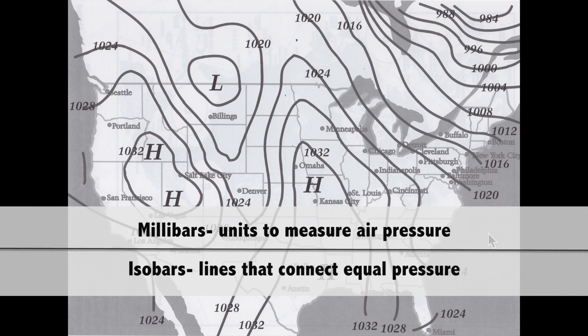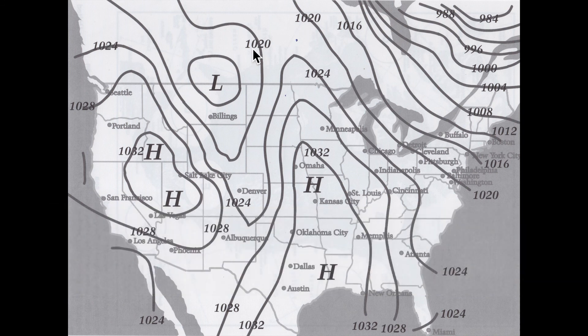As you follow any one of these lines, it connects areas of equal pressure — that's what isobar means. So for the 1020 line on this map, if you follow it, it crosses over several states and locations, but it shows there is the same amount of pressure at every point along that line.